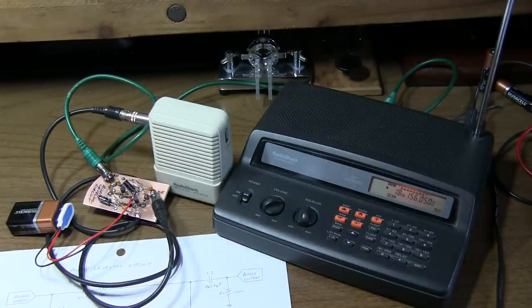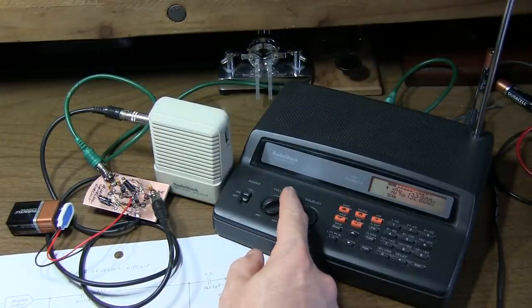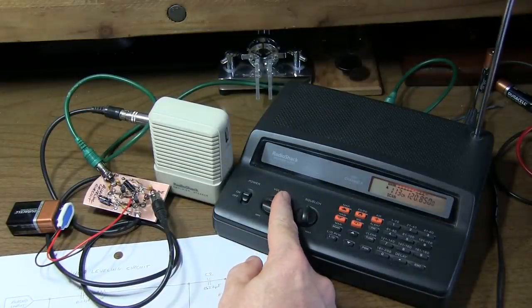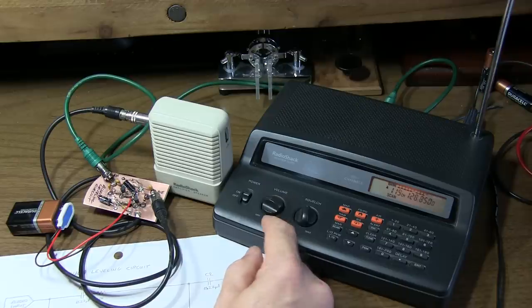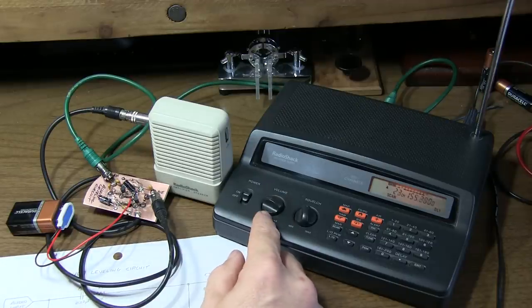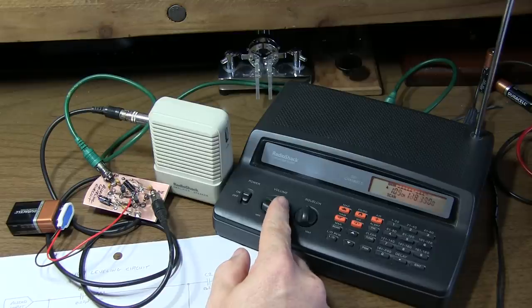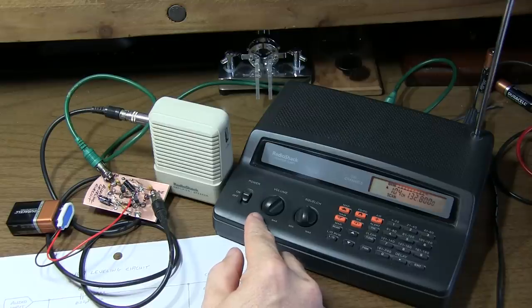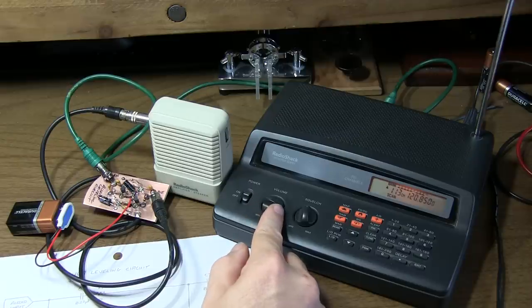So without further ado, let's turn the volume up on the scanner and listen to the results of this circuit. So that's at a low volume level, got a nice pleasing volume coming out of the speaker. Let's turn the volume way up here for the next transmissions. So no real change in volume from this very loud level. Just turn that volume way down and again no real change in that volume.